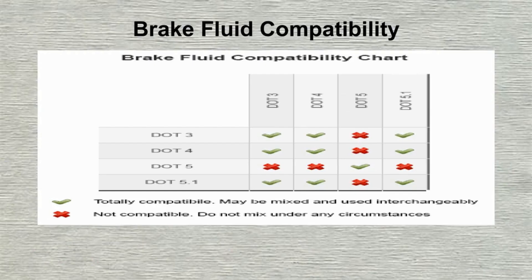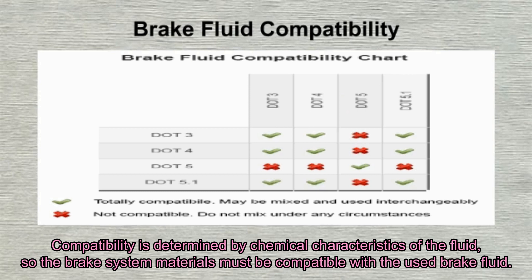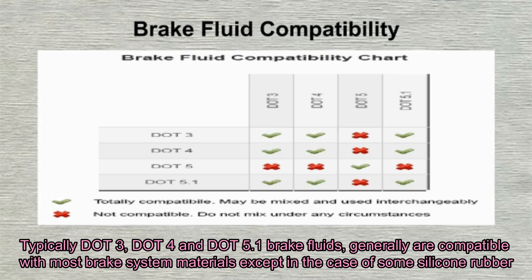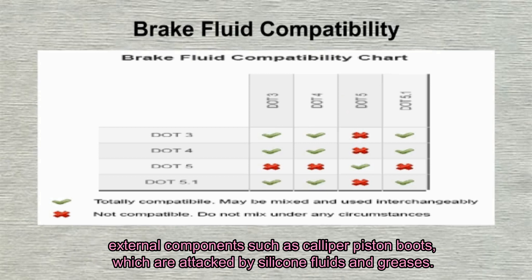Brake fluid compatibility is determined by the chemical characteristics of the fluid, so the brake system materials must be compatible with the brake fluid used. Typically DOT3, DOT4, and DOT5.1 brake fluids are generally compatible with most brake system materials, except in the case of some silicone rubber external components such as caliper piston boots, which are attacked by silicone fluids and greases.